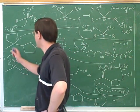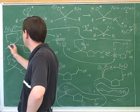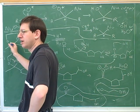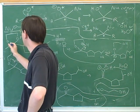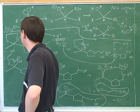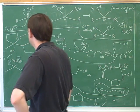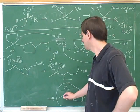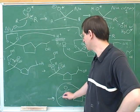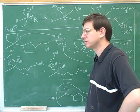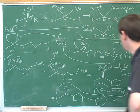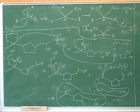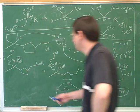What type of starting material is this? A cyclic ketone. And so when we reverse that, we get a ketone. Good, you got it.